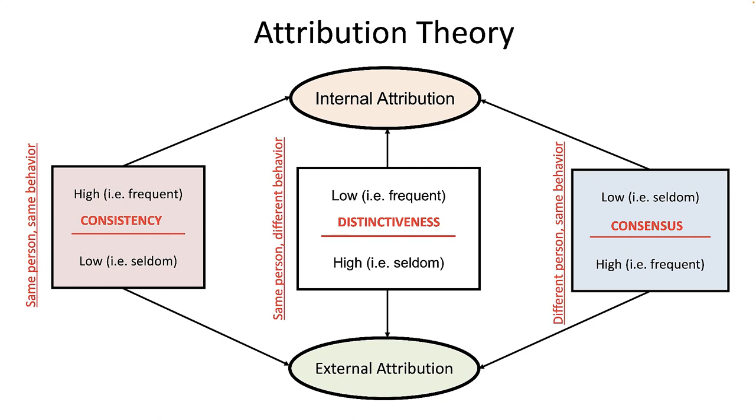In most cases, all three dimensions will line up to determine if the attribution of causality should be internal or external to the actor. However, an observer only really needs two of the three dimensions to point in the same direction to make a fairly accurate assessment of whether the cause of the behavior is internal to the actor or external to the actor. Let's move on.